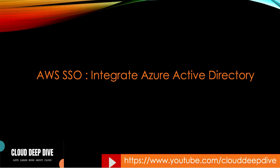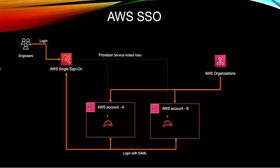In today's video we are going to talk about how you can integrate your Azure Active Directory as an external identity provider for AWS SSO. Right now, SSO is there, and whatever accounts you have underneath AWS Organization come into the process. When you enable it, it creates a role in these accounts, and when a user tries to log in they use that particular role. Here AWS SSO is acting as your identity provider because all the user and group information is stored in AWS SSO.